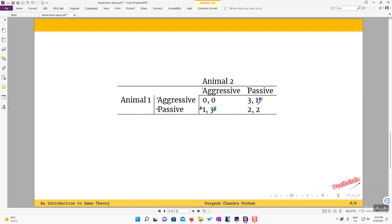If animal two is choosing to be passive, then it is better for animal one to choose aggressive. That gives him three compared to two when he remains passive. So we realize that there are two cells with mutual best responses and these are indicating the Nash equilibrium outcomes.